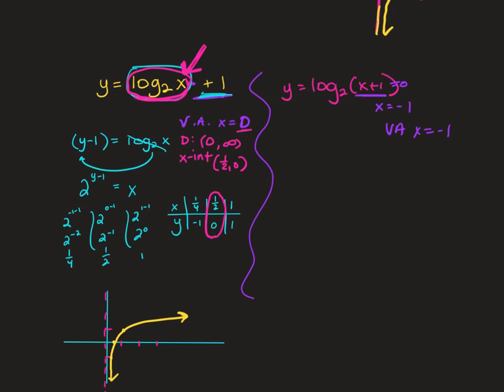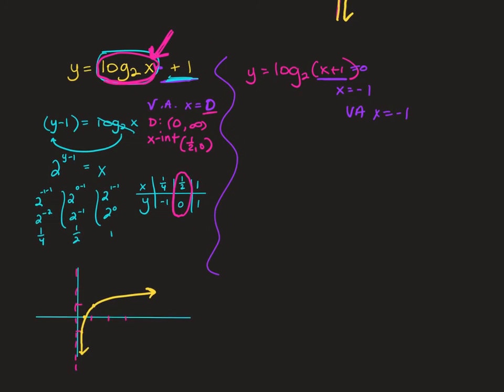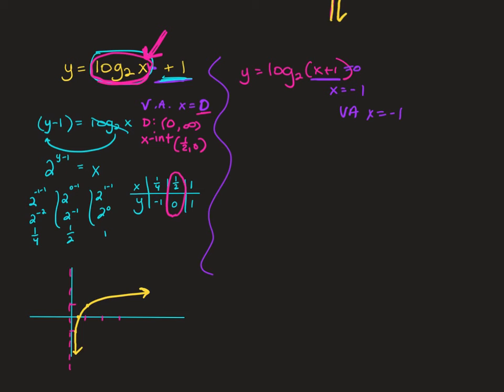For the pink example y equals log base 2 of (x plus 1): converting to exponential gives 2 to the y equals x plus 1, so x equals 2 to the y minus 1. Plugging in y equals negative 1, 0, 1 gives: 2 to the negative 1 minus 1 equals negative one-half; 2 to the 0 minus 1 equals 0; 2 to the first minus 1 equals 1. Domain is negative 1 to infinity, x-intercept is (0, 0).